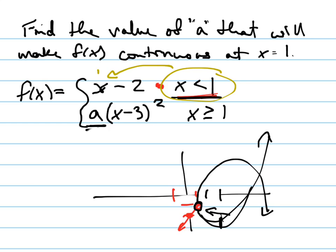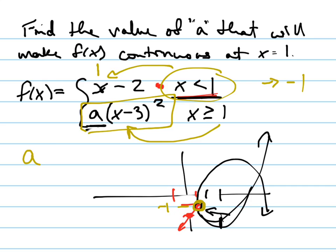All you have to do is plug in 1. Plug 1 into x minus 2: 1 minus 2 is negative 1. All I need to do is figure out what this equals when I plug 1 in here — I want that to be negative 1 also. So plug in: A times, plug 1 in, 1 minus 3 squared, and I want that whole thing to equal negative 1. That's an algebra problem.